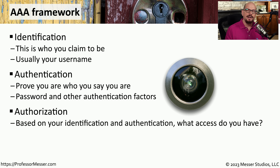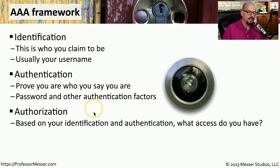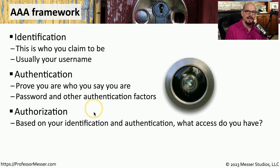Now that we've identified who we are, we now need to determine what type of access we have. And that's done through authorization. If we're part of the shipping and receiving department, then we should have access to systems that should only be available to shipping and receiving, and we should not have access to information that might be in the finance department.